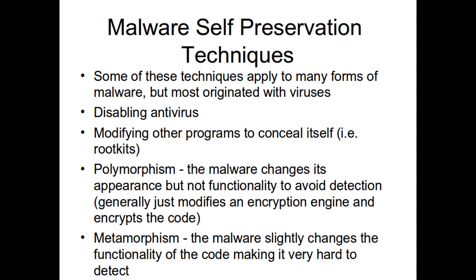Usually the detections work by matching either a hash or looking for a flat-out exact string that is in a virus or malware. The other common approach is heuristic scanning, which is where they look for behaviors. Another attack is modifying other programs to conceal itself — this is like a rootkit. Rootkits go in and change software.